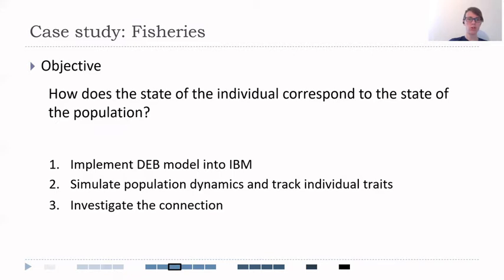And in order to do so, we wanted to find a correlation between the individual state and the population dynamics. We did this by implementing the DEB model into the IBM. Then we simulated population dynamics and in parallel, we tracked individual traits. Then we investigated the connection and correlation between the two levels.